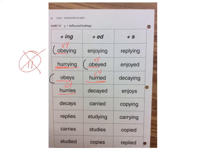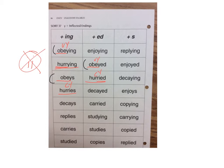So for consonant-y words, when adding -ed and -s, you drop the y and add i. For vowel-y words, when adding -ed and -s, you just add the ending. Now for -ing, for all of them — whether consonant-y or vowel-y — you're just adding -ing, because we don't have any double-i words. That's how you do your inflected endings — sort them into -ing, -ed, and -s.